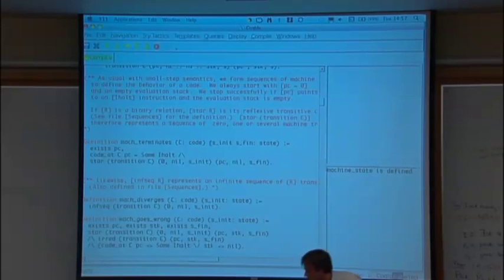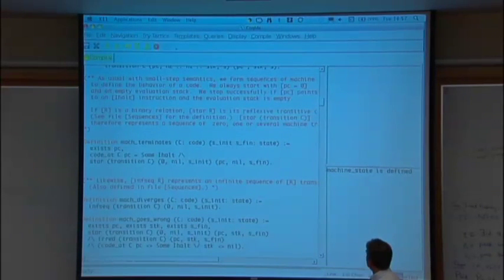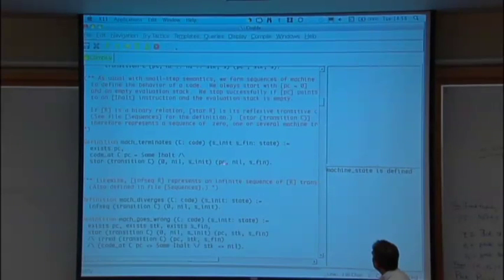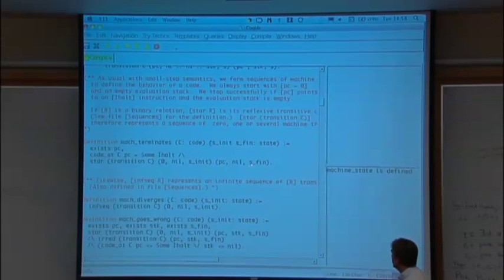One is termination. So we start the machine at zero with an empty stack and some initial state. And maybe so in zero, one or several transitions. So this is a star operator. That is defined in a little library called sequence that you can find on the web page. So basically a star of a relation is reflexive transitive closure of that relation. So if in zero, one or several transitions, we get to a state where we are at a PC where the instruction is halt, the stack is empty and we get this final state. And then we say, OK, we've successfully terminated. And this is a final state.